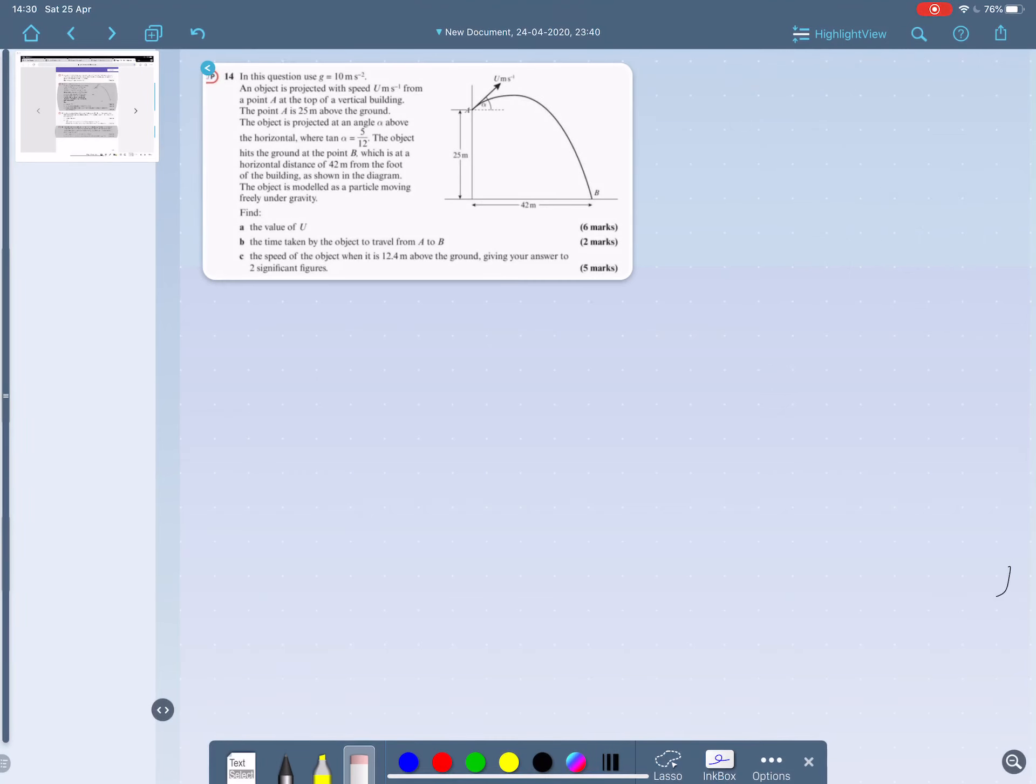Question 14, exercise 6c. The diagram is given here, so we don't need to draw anything, but we need to take a careful look at this diagram and see what's given. We can see the horizontal displacement from A is 42 meters and the vertical displacement from A is 25 meters down.